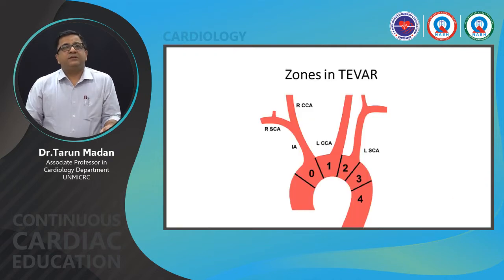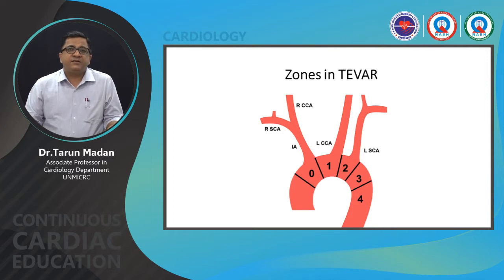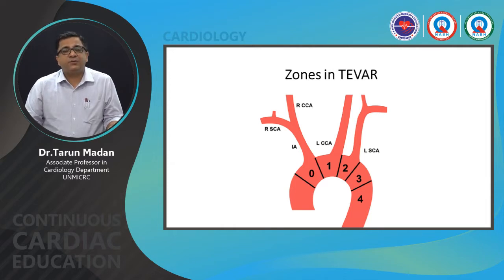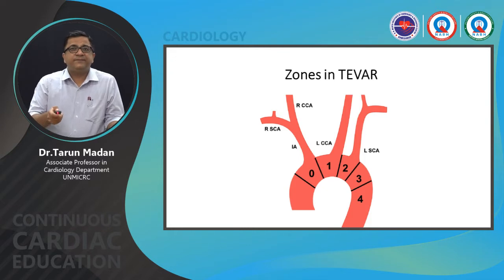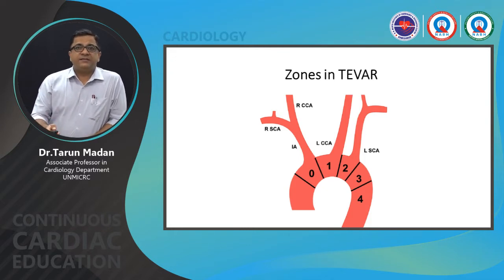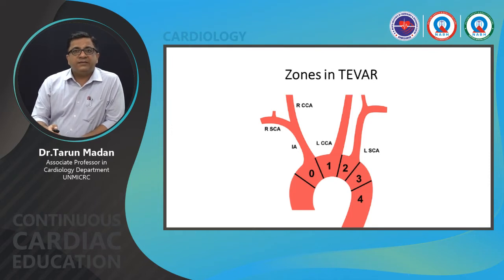There are different zones in the thoracic aorta for treatment planning. Zone 0 is proximal to or across the innominate artery. The aorta has three main branches: the innominate artery, the left common carotid artery, and the left subclavian artery. Zone 1 is between the innominate and left carotid, zone 2 is distal to the left common carotid, zone 3 is distal to the left subclavian, and zone 4 is beyond that.